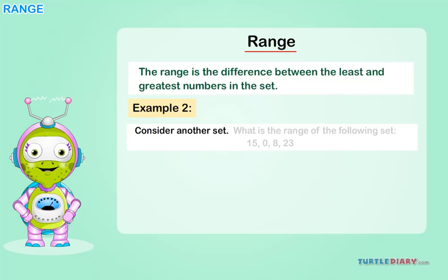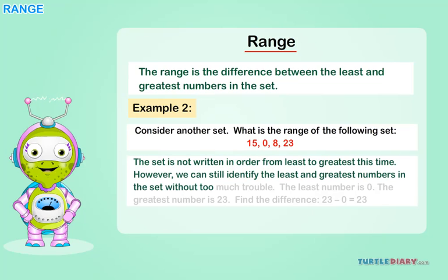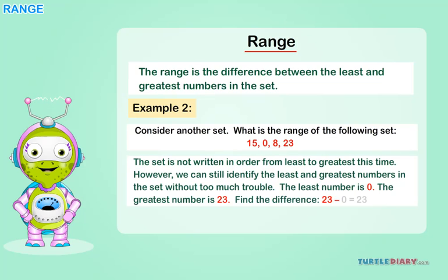Consider another set. What is the range of the following set: 15, 0, 8, 23? The set is not written in order from least to greatest this time. However, we can still identify the least and greatest numbers in the set without too much trouble. The least number is zero, the greatest number is 23. Find the difference: 23 minus zero equals 23. 23 is the range.